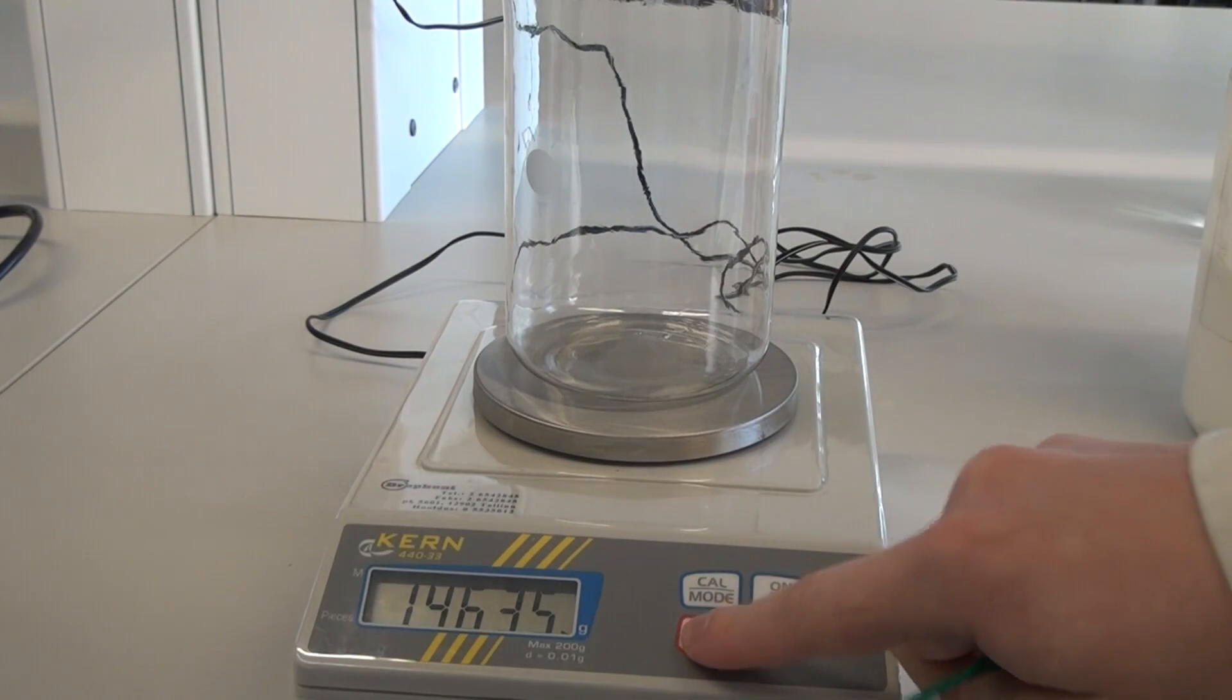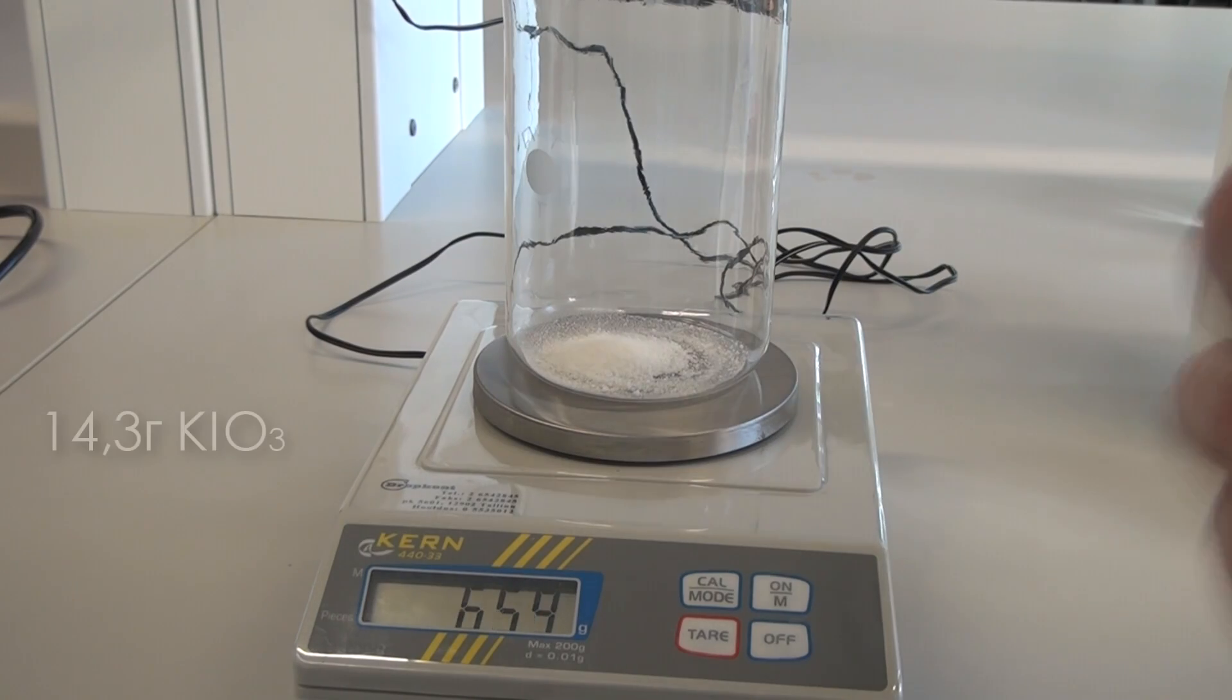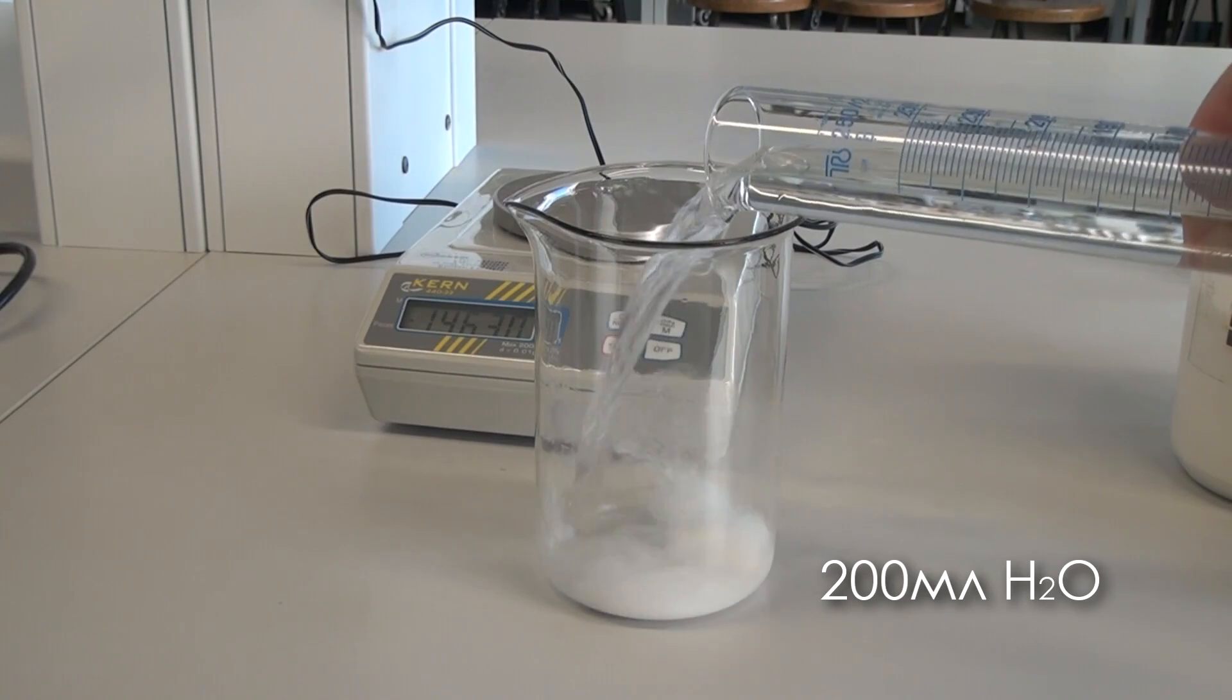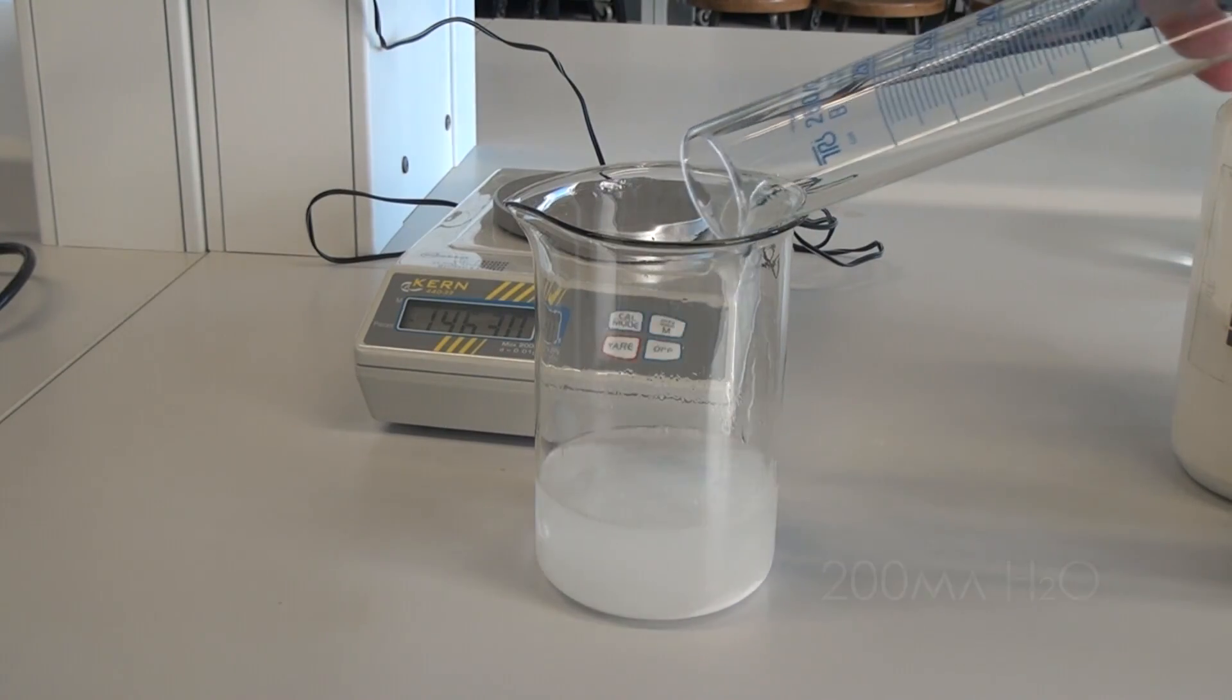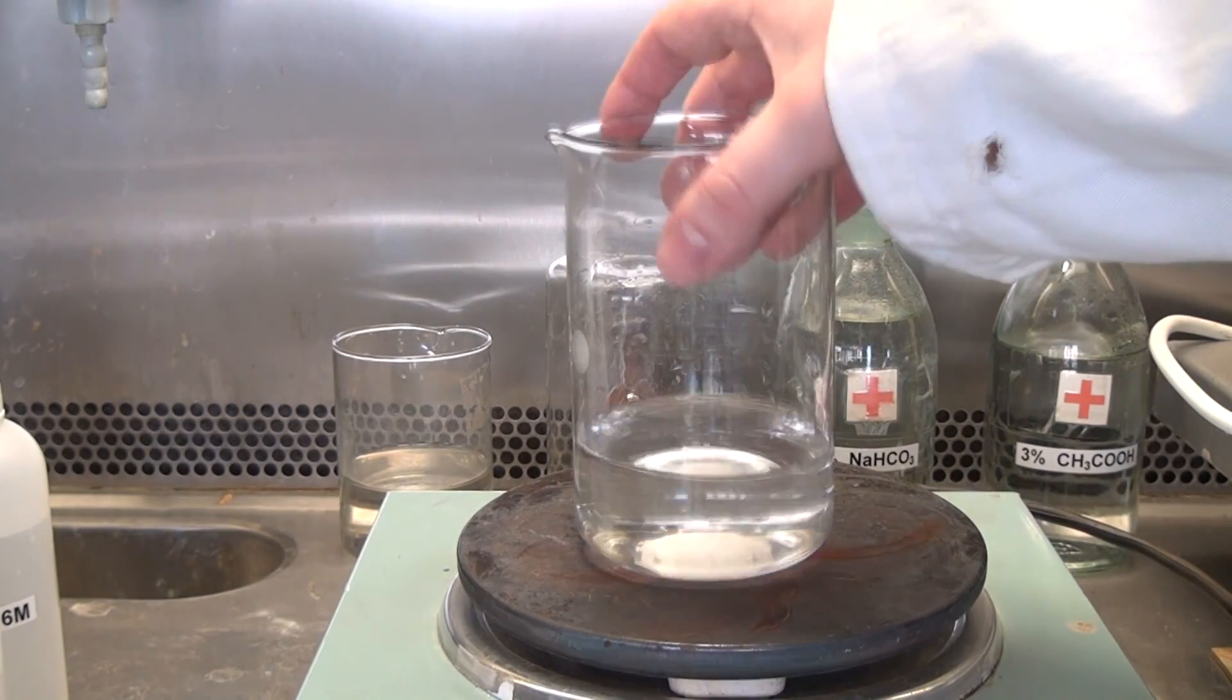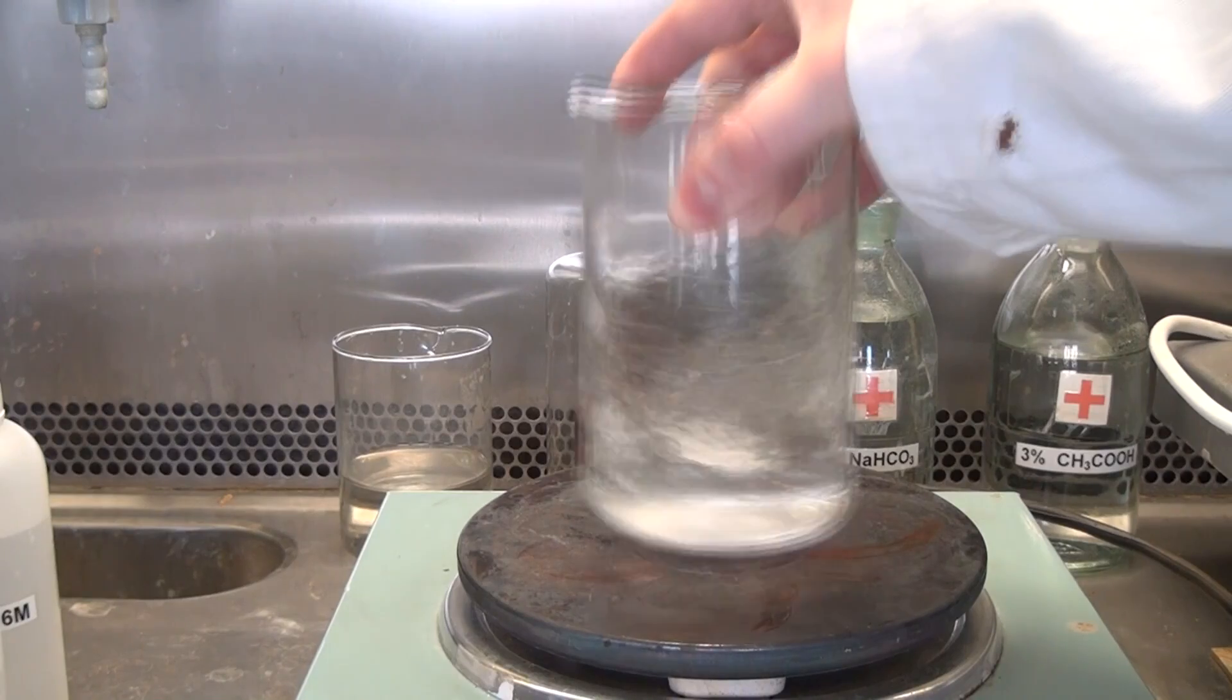To prepare the second solution, we'll need to weigh the materials. Take a large glass and add 14.3 grams of potassium iodate, then add 200 milliliters of water. As the solubility of potassium iodate in water is not very high, heat the mixture on a hot plate to accelerate dissolution.